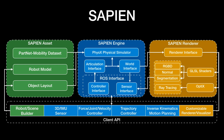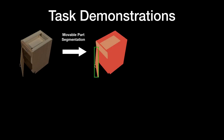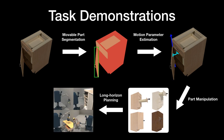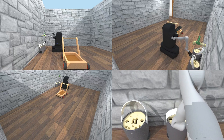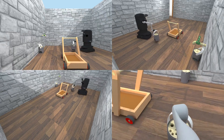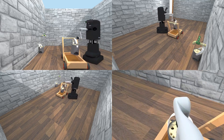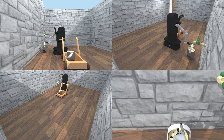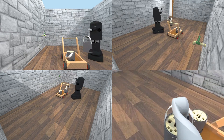We demonstrate the usage of Sapien with the following tasks: movable part segmentation, motion parameter estimation, part manipulation, and long-horizon planning tasks. These tasks are chosen since solving them all will take us one step closer to realizing home-assisted robots. Here is a human demonstration for a long-horizon task in Sapien — the robot needs to load the cart with buckets and then push the cart. Designing and studying such robotic tasks can be hard in the real world, but with Sapien, we hope to accelerate vision and robotics research by providing a realistic simulated environment.